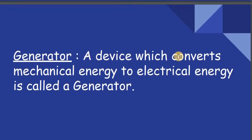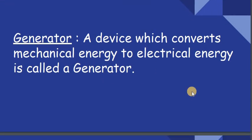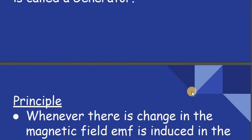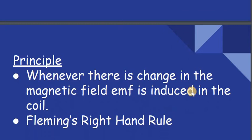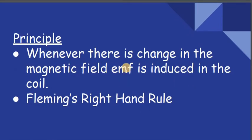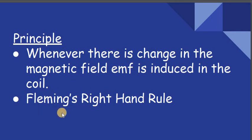A generator is a device which converts mechanical energy to electrical energy. The principle behind it is that whenever there is a change in the magnetic field, an EMF is induced in the coil, and the direction of the induced current is given by Fleming's right hand rule.